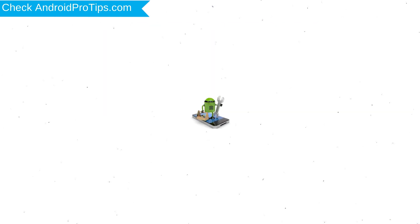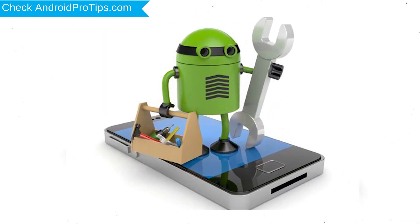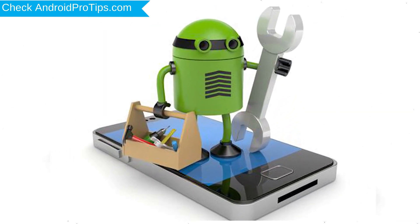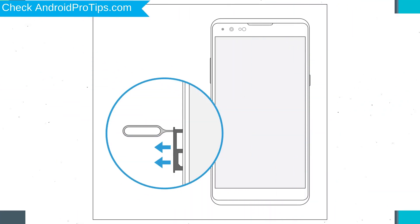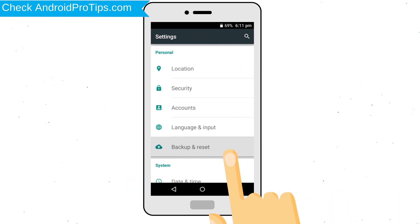Before resetting your mobile, make sure your battery is above 50%. Remove SD cards and SIMs. Back up your Android mobile data if possible.